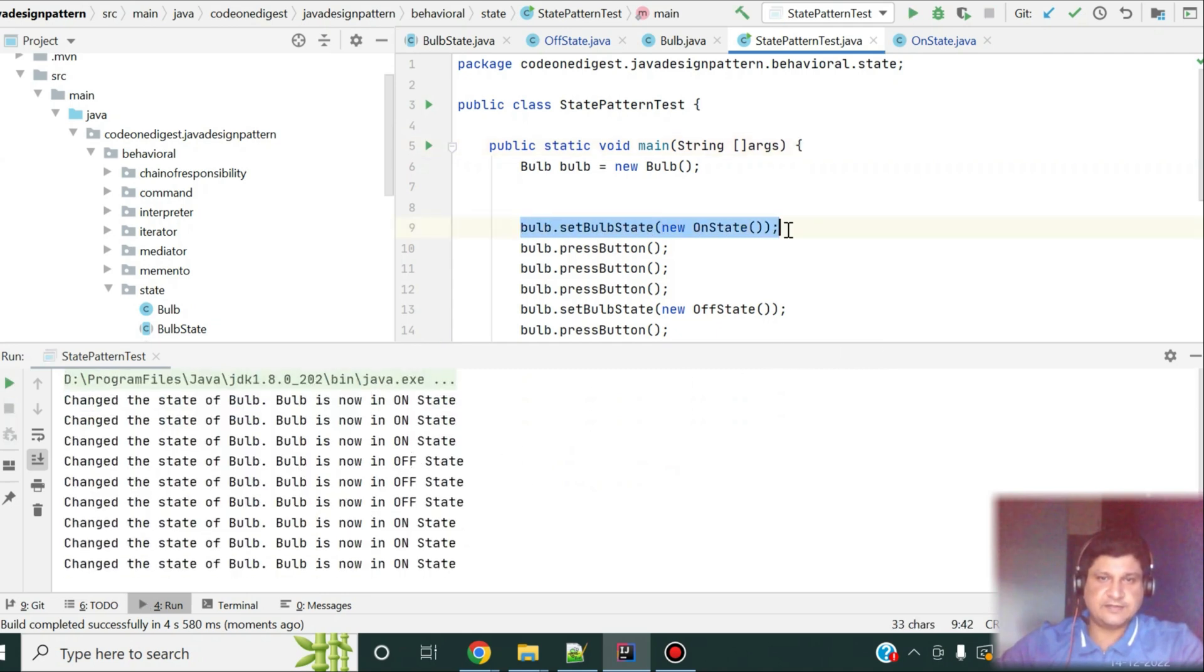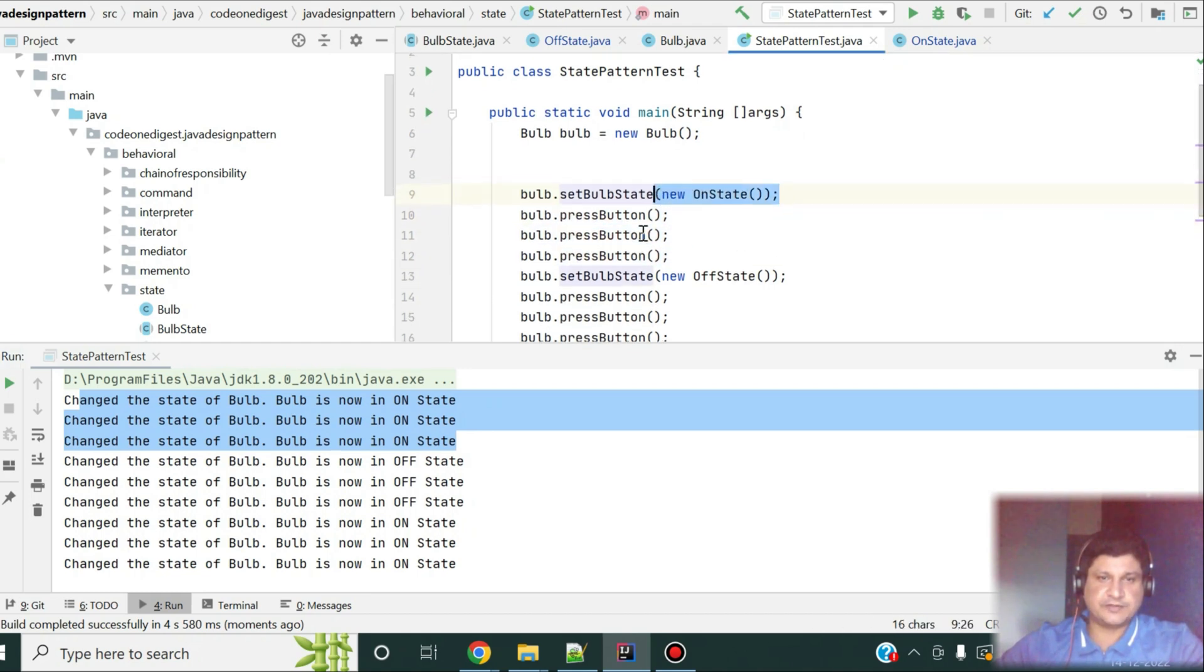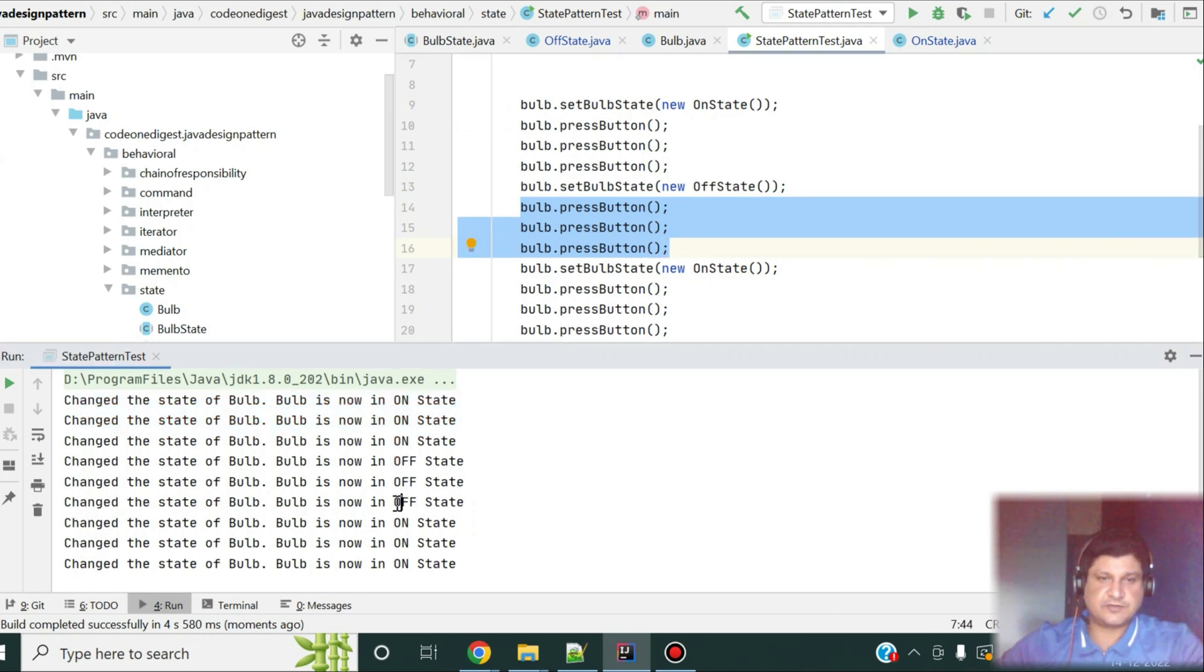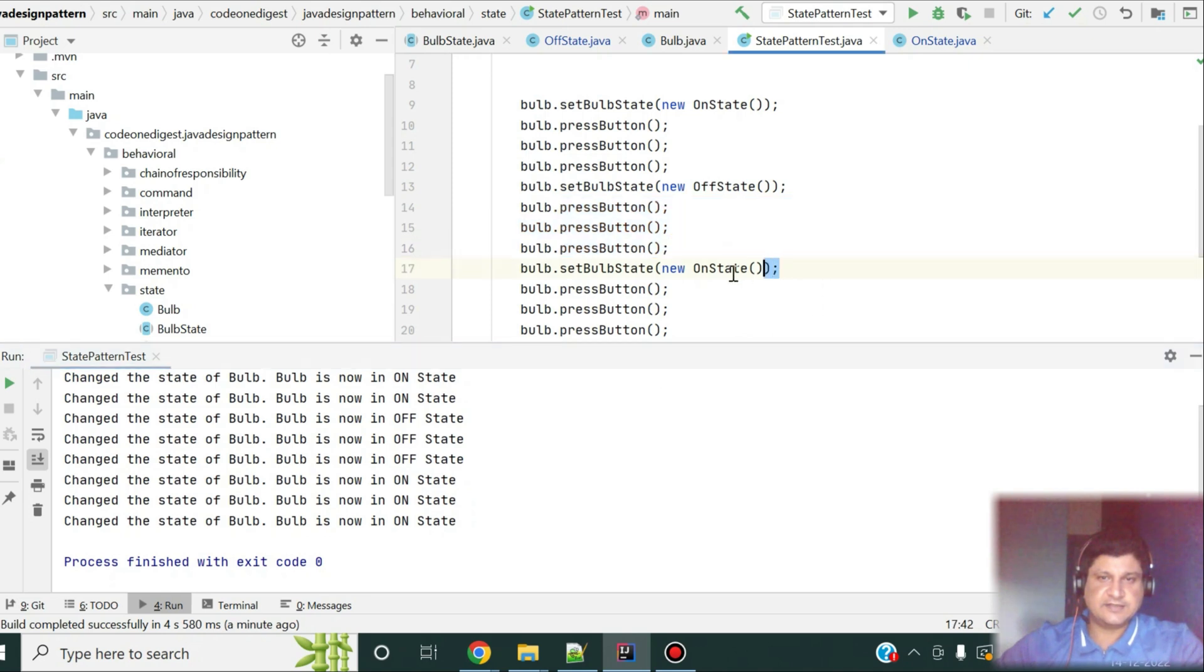So, when I am setting it to on state, here it says, change the state of a bulb, bulb is now in on state. When I am pressing this button three times, it is printing that bulb is in on state because we have set its state to on. Then, at line number 13, we are setting it off. Then, these three will print that bulb is in off state. The bulb is in off state, off state, off state. And then, here, I am setting the bulb state on again. So, it is printing it is on.